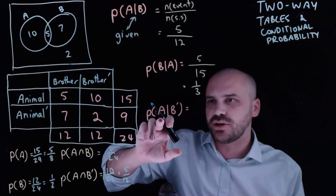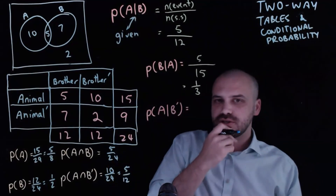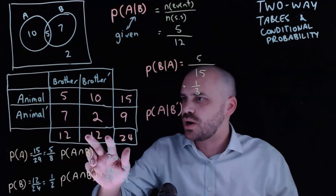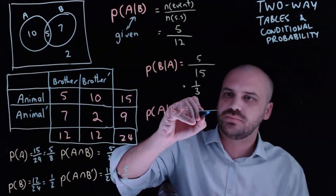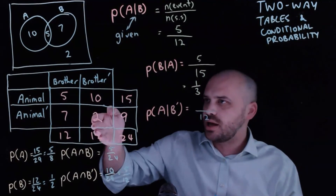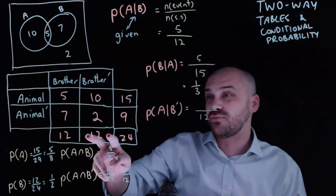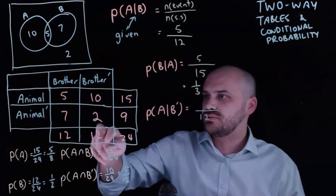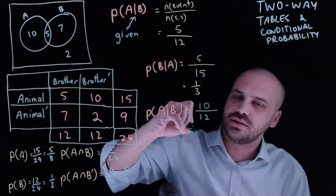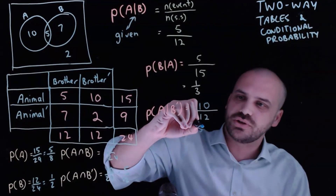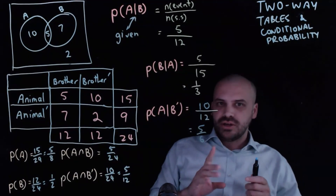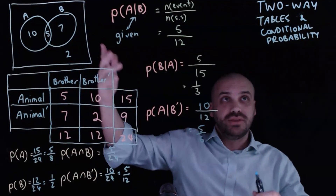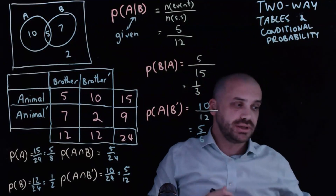One more example: the probability that someone has an animal given they don't have a brother. You meet a person and they say they don't have a brother, so they're one of 12 people. People who don't have brothers appear very likely to have an animal — 10 out of 12, which is 5 out of 6. That is two-way tables: we've connected them to Venn diagrams and explored conditional probability using 'given.'